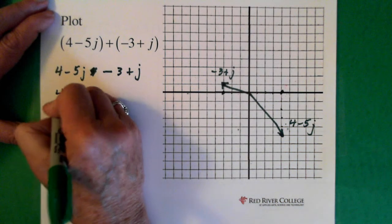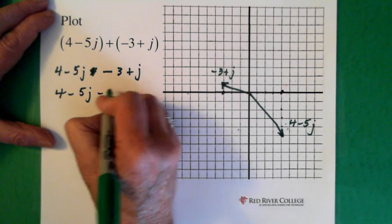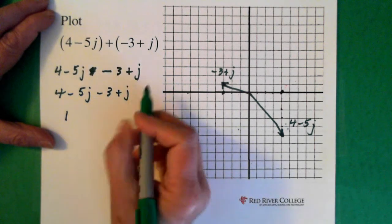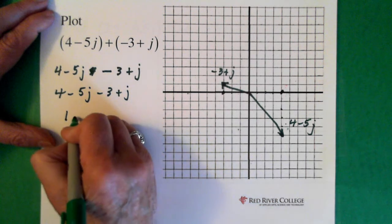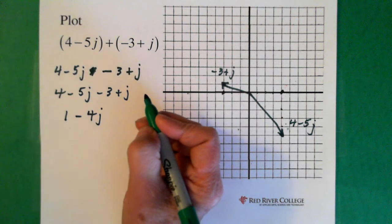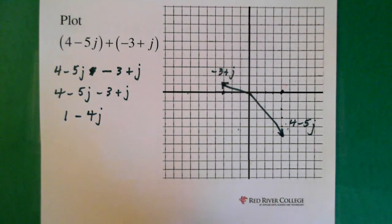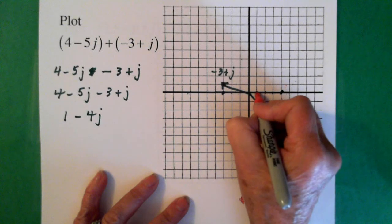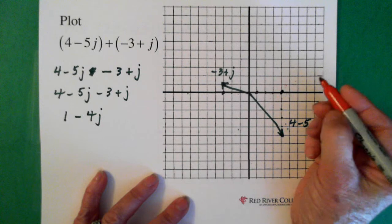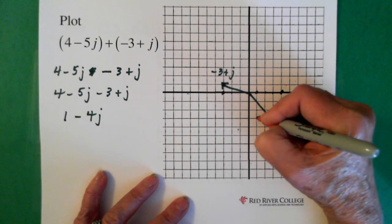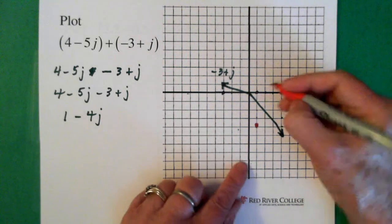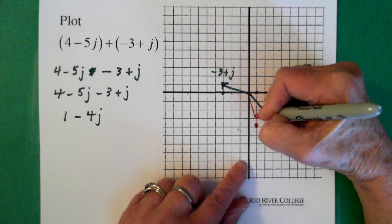So rewriting that: 4 minus 5j minus 3 plus j. Now 4 minus 3 gives us 1. Minus 5j plus j gives us minus 4j. So now we'll plot the resultant — the resultant is 1 minus 4j. And our final vector is plotted here.